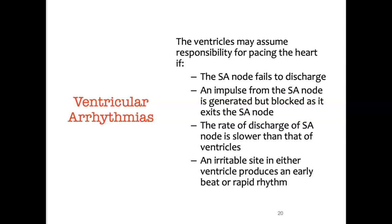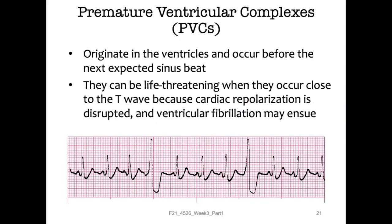Premature ventricular complexes — PVCs — originate in the ventricles. Their significance is that they can become deadly when they occur frequently or if they land on the T wave during repolarization. In this six-second strip there are two PVCs; multiply by ten and you have approximately 20 PVCs per minute, which requires intervention.